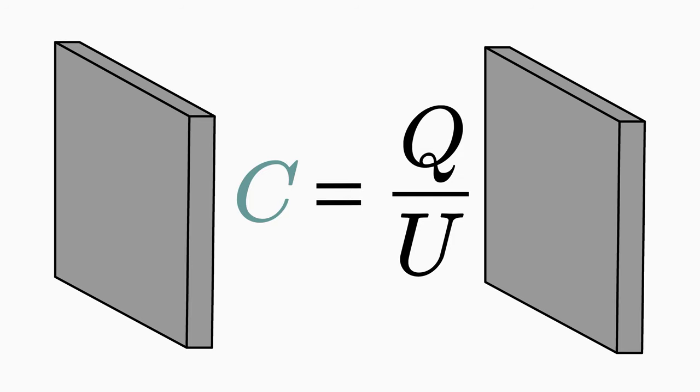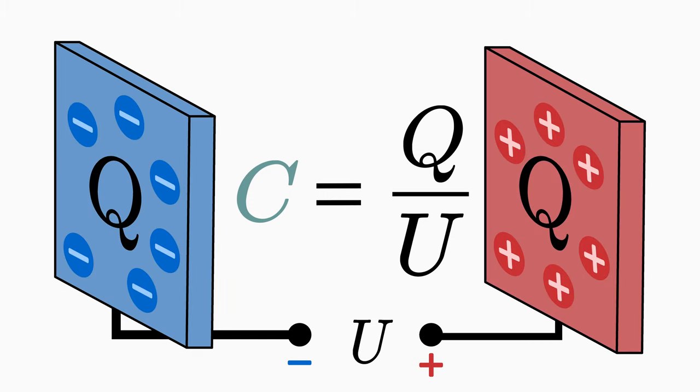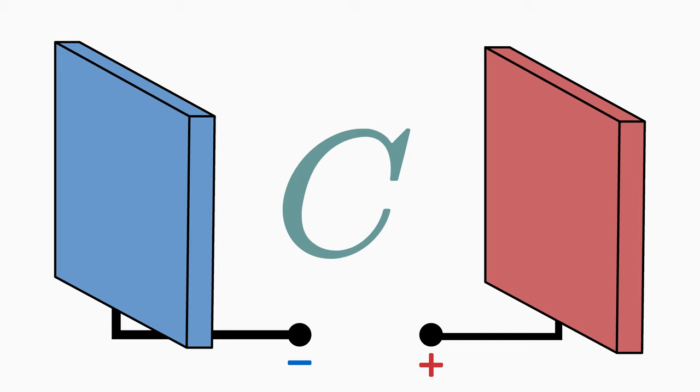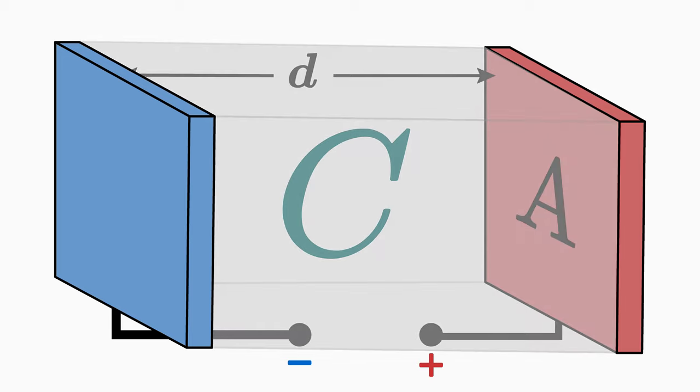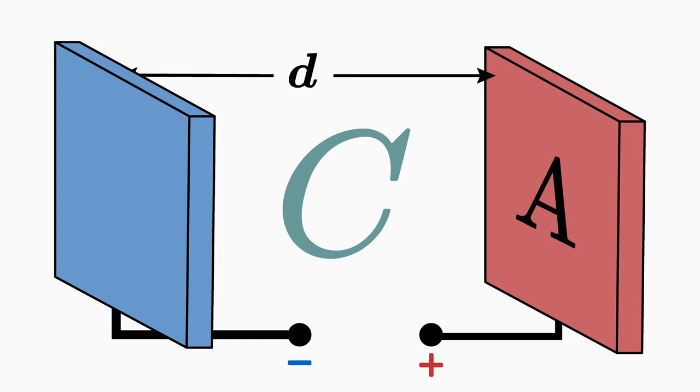The capacitance indicates by how much the voltage U changes when the charge Q on the plates is changed. Capacitance is an important characteristic quantity of a capacitor, which depends mainly on its geometry, that is on the distance d and on the plate area A. The capacitance also depends on the material with which the space between the plates is filled. Here we assume that between the plates there is a vacuum or at least only air.